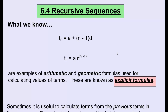Here are the two formulas we've used for the other types of sequences. The first one, Tn equals a plus n minus 1 times d, is used for arithmetic sequences — sequences that have a common difference between each term. And Tn equals a times r to the exponent n minus 1 is used for geometric sequences, or sequences that have a common ratio.